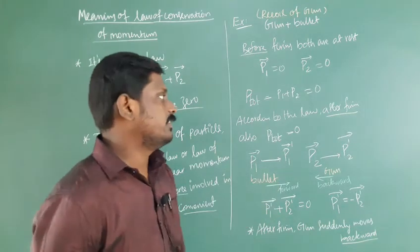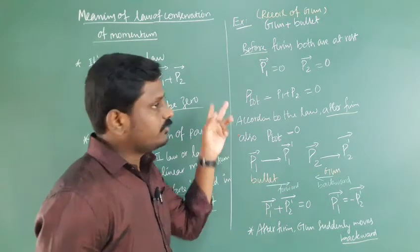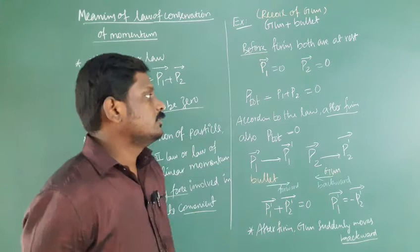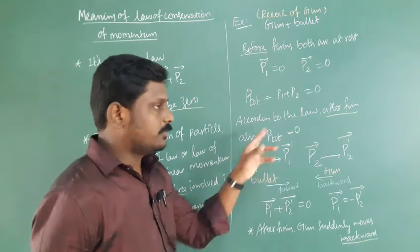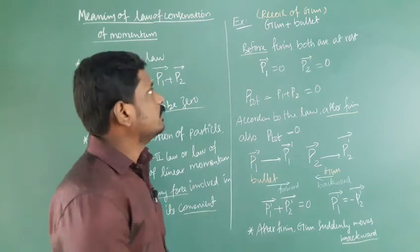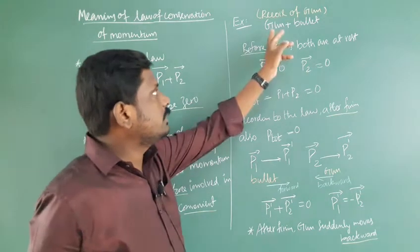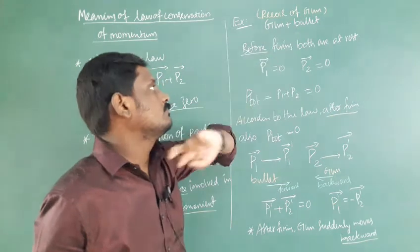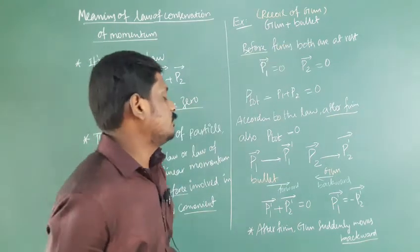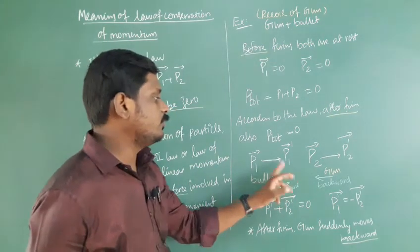According to law of conservation of linear momentum, before firing equals after firing. After firing also, the total momentum is zero. When the gun is fired, the gun exerts a force on the bullet. The bullet's momentum changes from P1 to P1 dash.